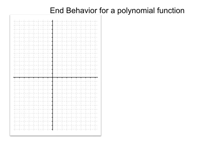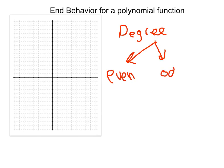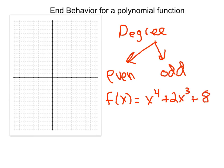When you're asked to describe the end behavior for a polynomial function, what we need to look at is the degree — specifically, whether the degree of the polynomial is even or odd. To find the degree, we look for the term with the largest exponent. For example, f(x) = x⁴ + 2x³ + 8 has a degree of 4, because that's the largest exponent. So the degree of this polynomial function is 4, which is even.